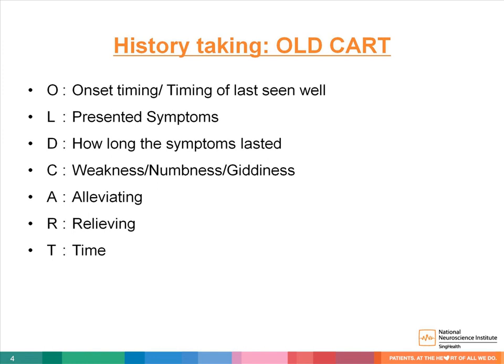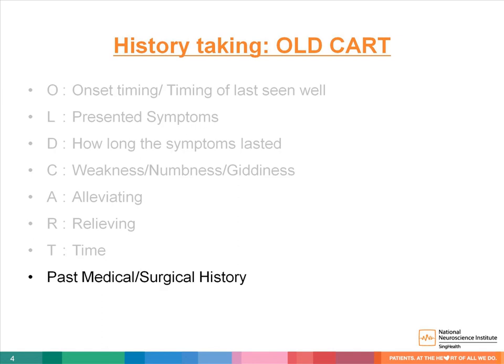In addition, the presenting symptoms such as weakness, numbness, and giddiness help to confirm the type of stroke syndrome the patient is experiencing. Alleviating and relieving factors for neurological symptoms may point to stroke mimics, such as migraine or hypoglycemia. The patient's past medical and surgical history — such as recent surgery or even a recent stroke — may contraindicate some of the available stroke treatments. The patient's current medication list, such as anticoagulation medications, also helps the clinician decide on the suitability of treatment.